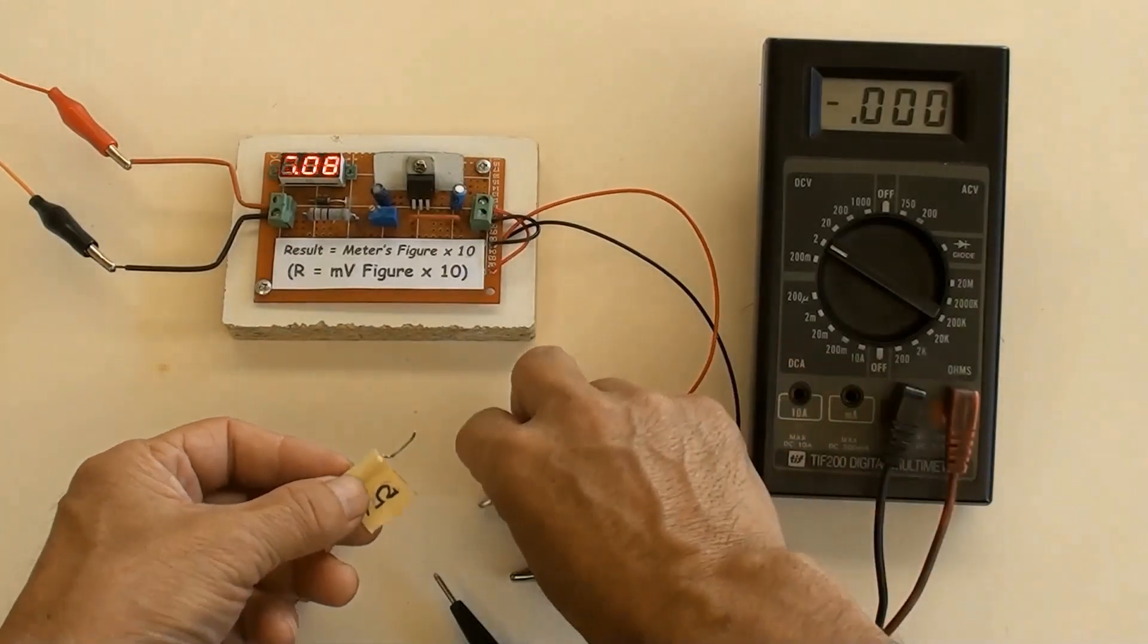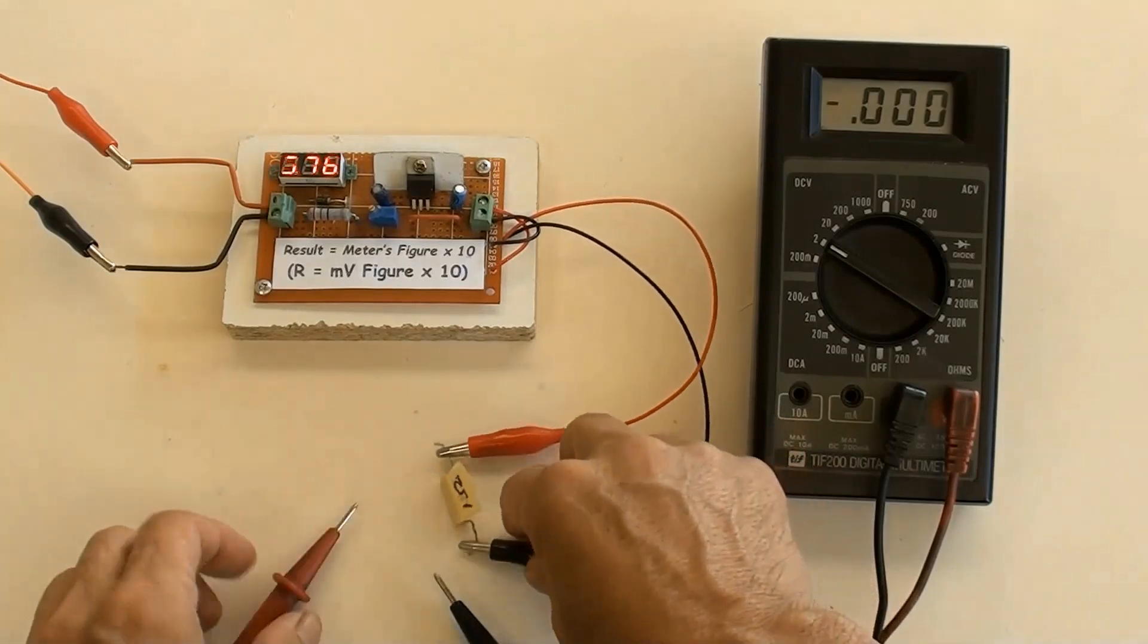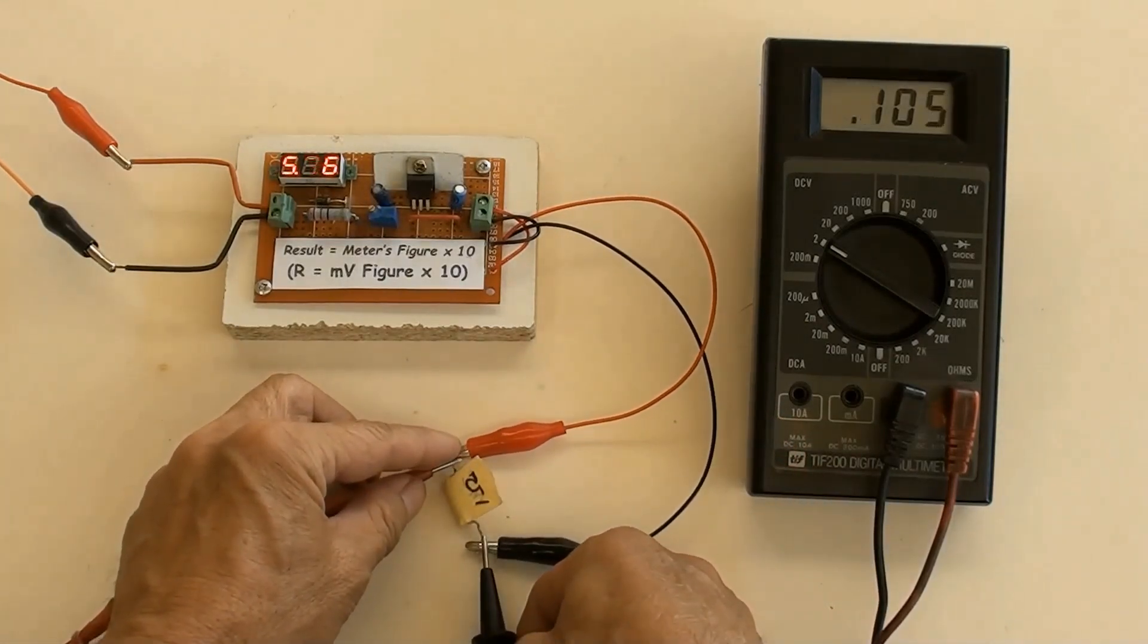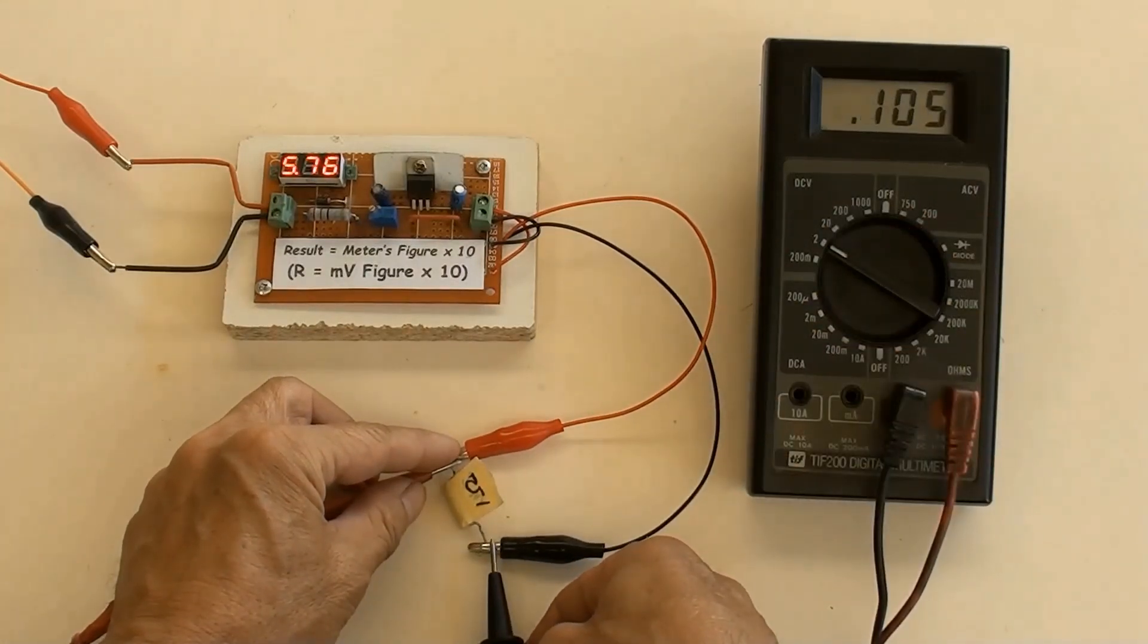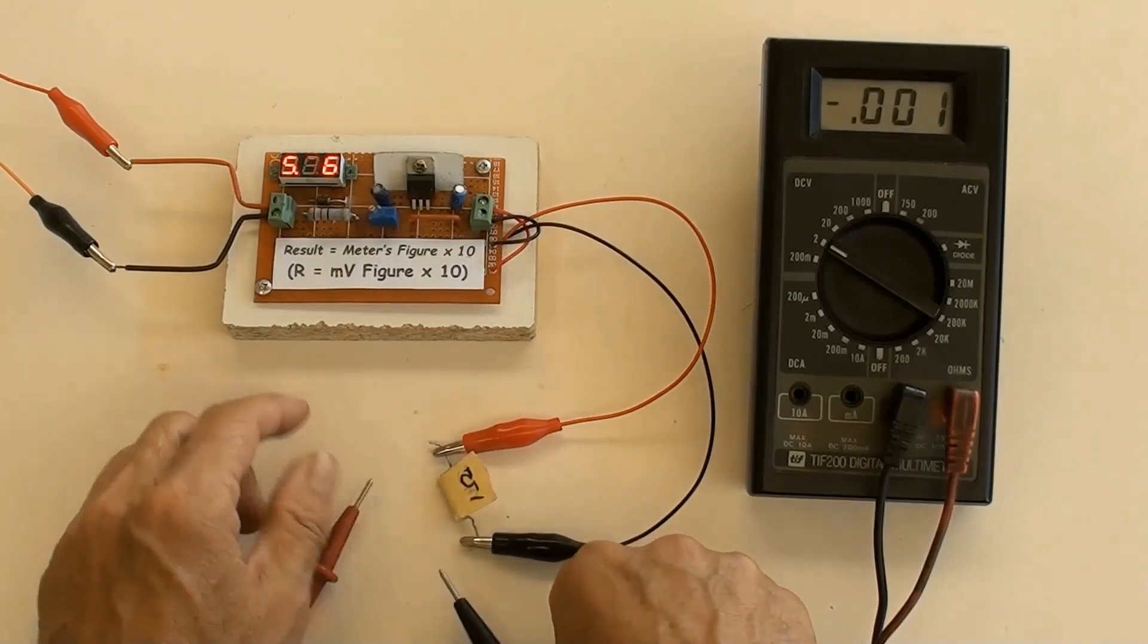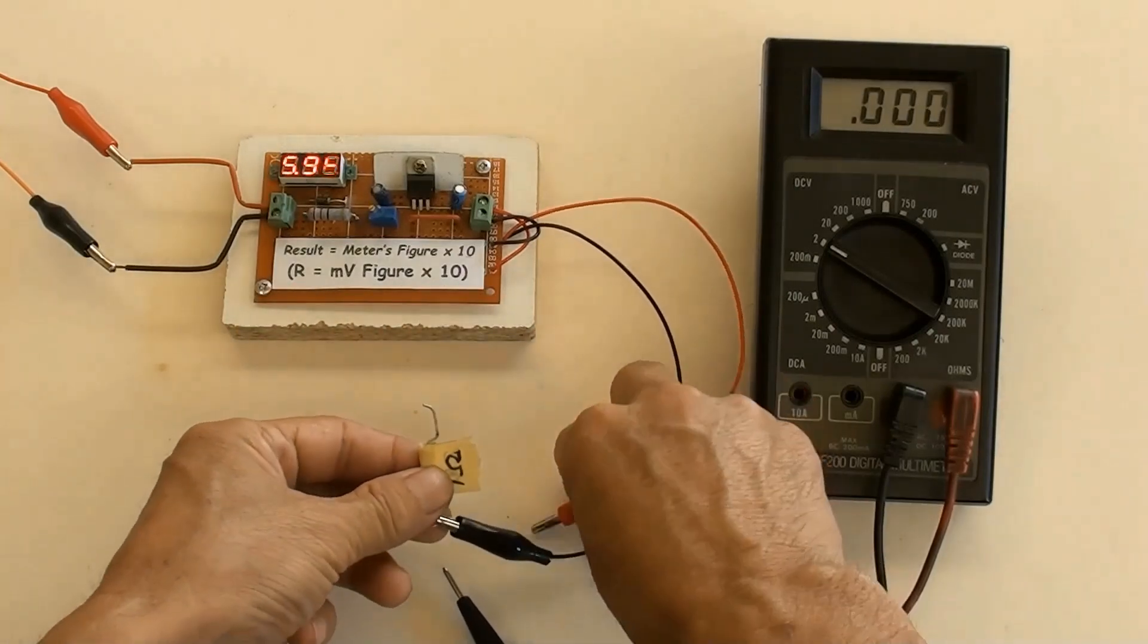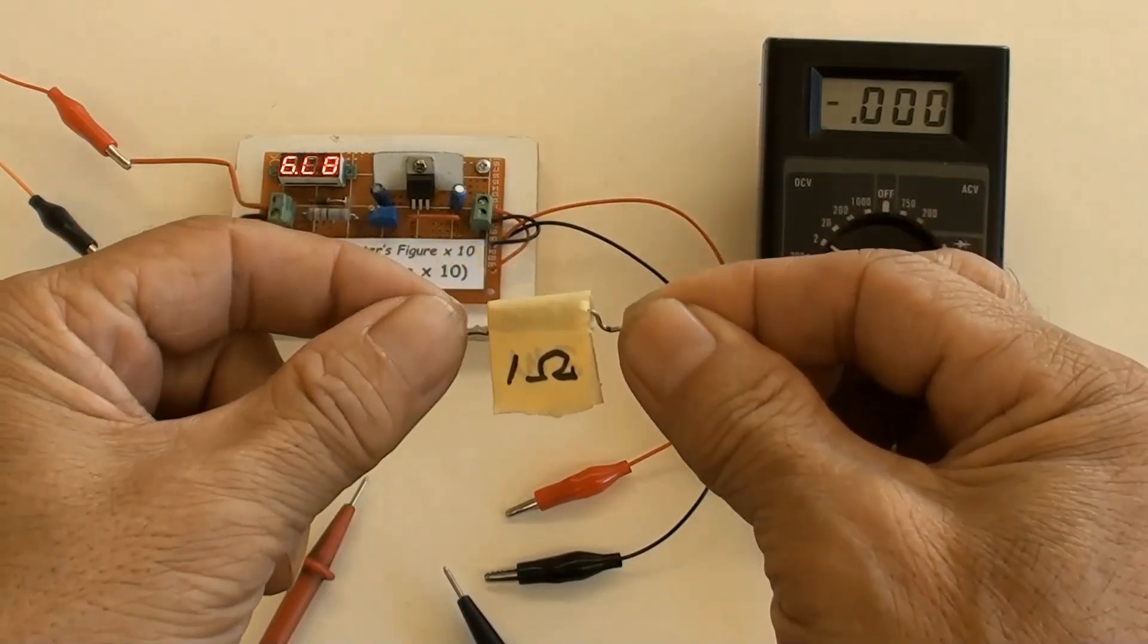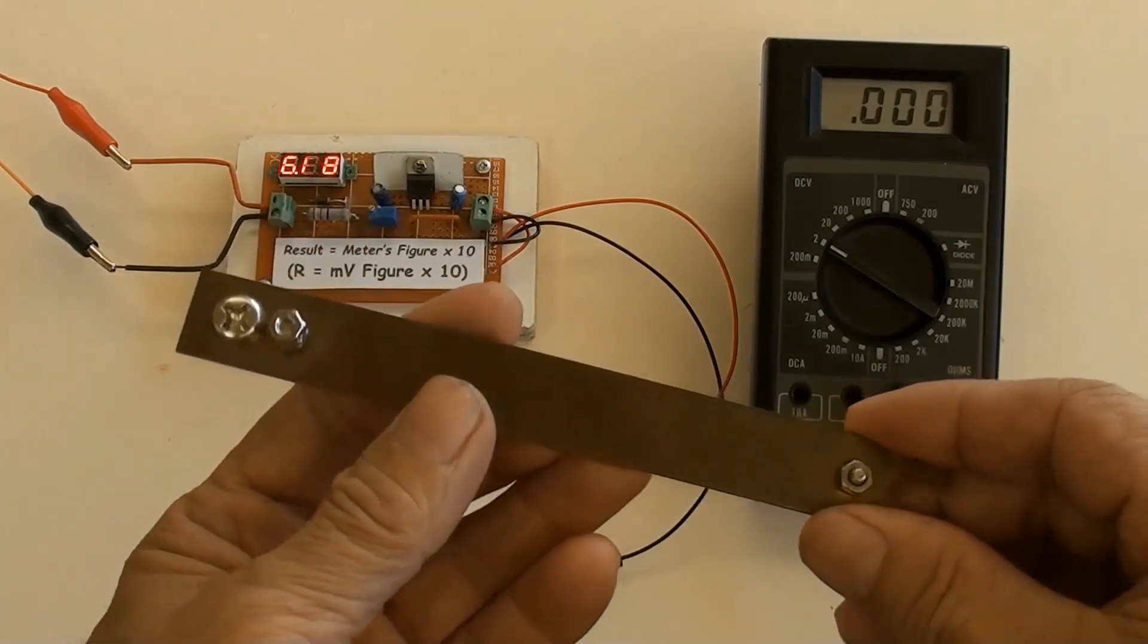Measuring another resistor. Using the formula on the sticker, 10 times equals 1.005 ohms. The measured result is 1 ohm.